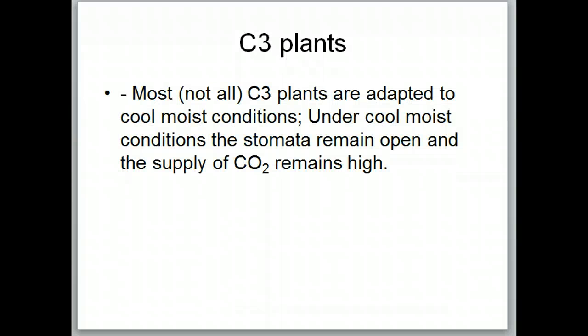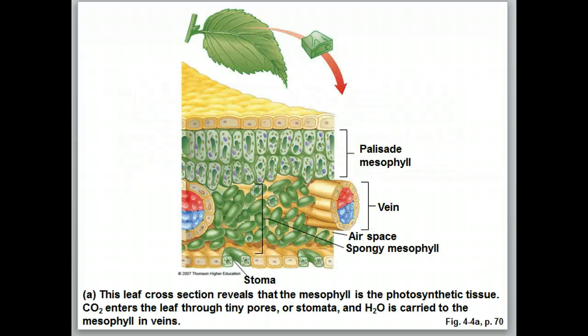C3 plants are adapted to cool, moist conditions. Under cool, moist conditions the stomata remain open and the supply of carbon dioxide stays high. Under hot, dry conditions the stomata close, choking off the supply of carbon dioxide, while oxygen is still produced in the chloroplast and enters the Calvin cycle, reducing carbohydrate production. In a cross-section of the leaf we can see the stoma at the bottom.